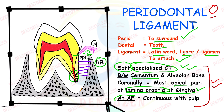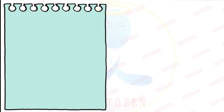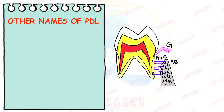Regarding the origin of PDL: its cells and fibers are derived from the dental follicle or dental sac, along with the bone and the cementum. PDL is also formed from the dental follicle and dental sac, as discussed in tooth development.